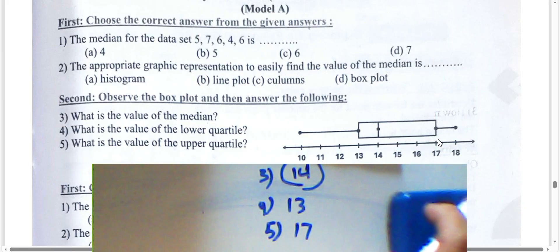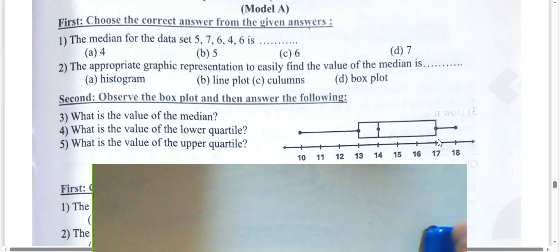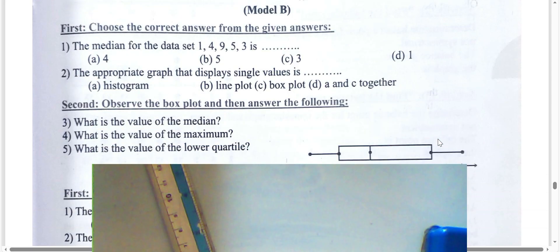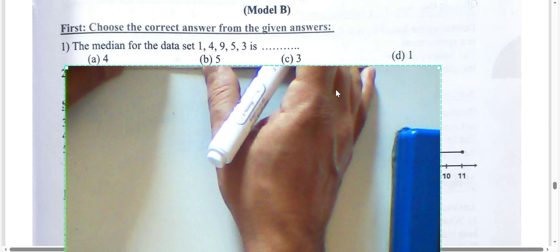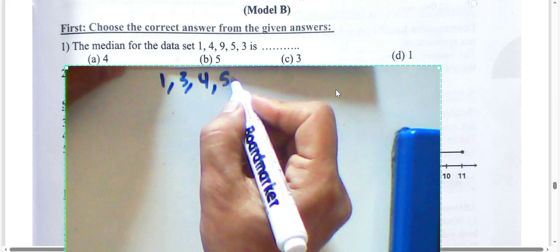Question five: what is the value of the upper quartile? The upper quartile is 17. Next question: find the median for the data. First, arrange the digits in ascending or descending order from smallest to greatest. The digits are one, three, four, five, and nine. Four lies in the middle, so the median is four.